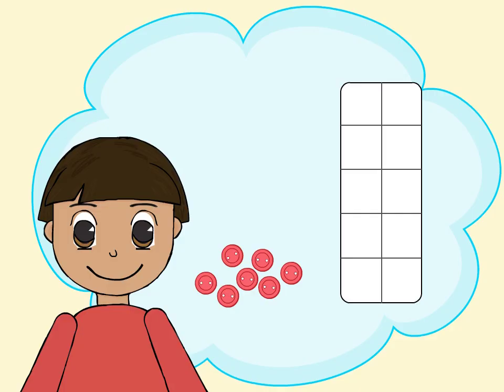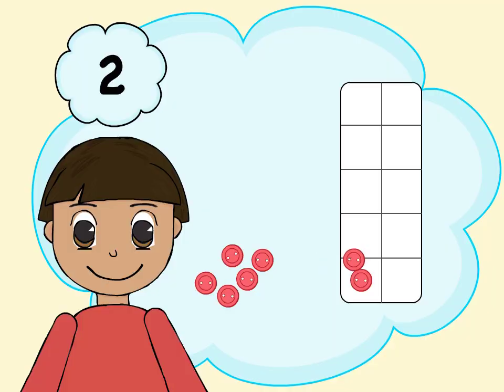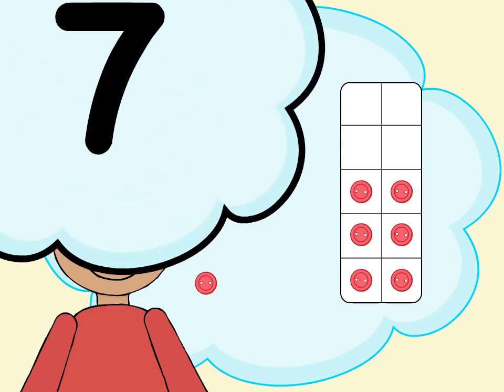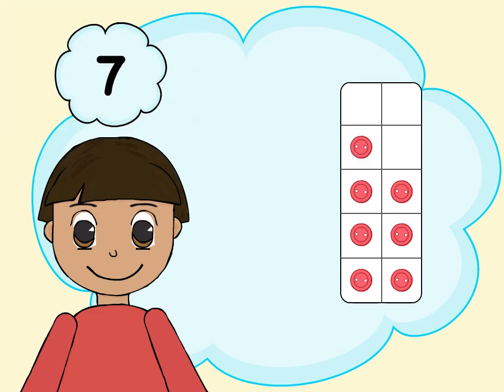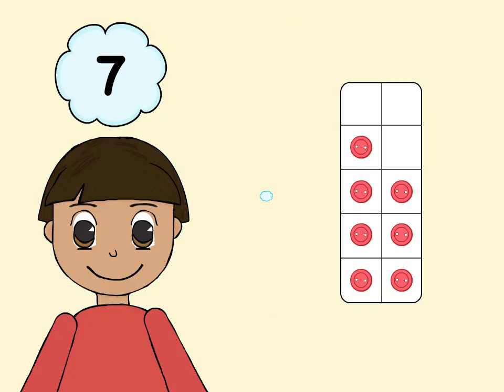As your child counts the objects, have him or her put one object into each square. This reinforces one-to-one correspondence, essential to understanding counting. Then talk about how many objects there are in all.